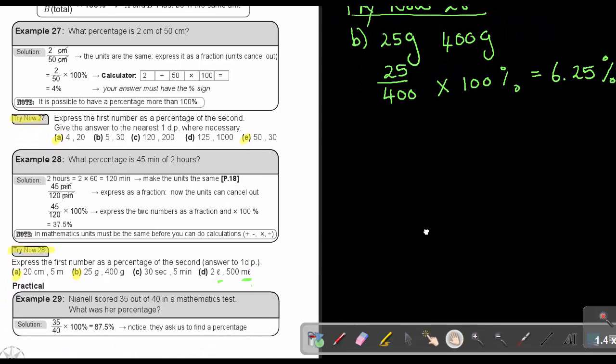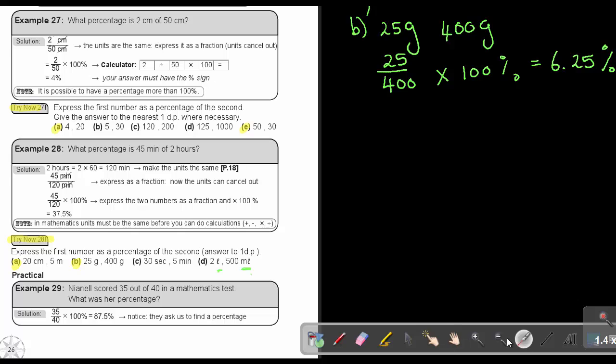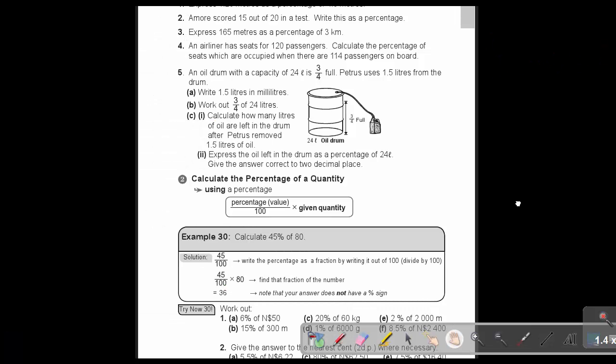Let's look at the practical sum. Nia Nell scored 35 out of 40 in a mathematics test. What was her percentage? So it's 35, divide 40, times 100%, and I just get her percentage. Let's just do one, which we end this session with doing one.